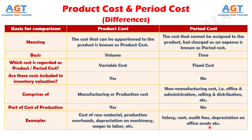In a nutshell, we can say that all the costs which are not product costs are period costs. The simple difference between the two is that product cost is a part of cost of production because it can be attributable to the products. On the other hand, period cost is not a part of the manufacturing process, and that is why the cost cannot be assigned to the products.